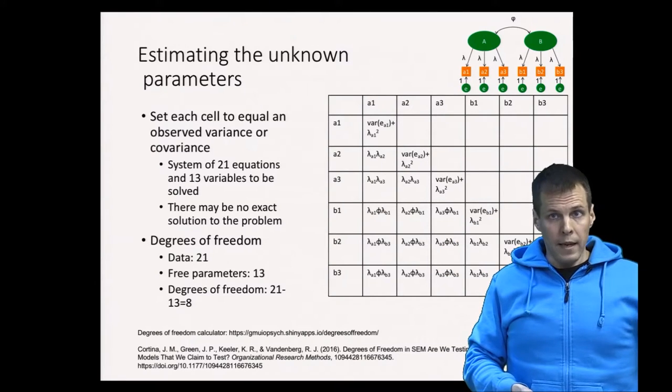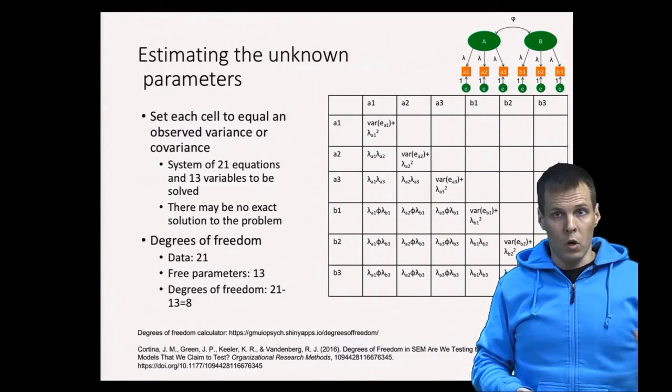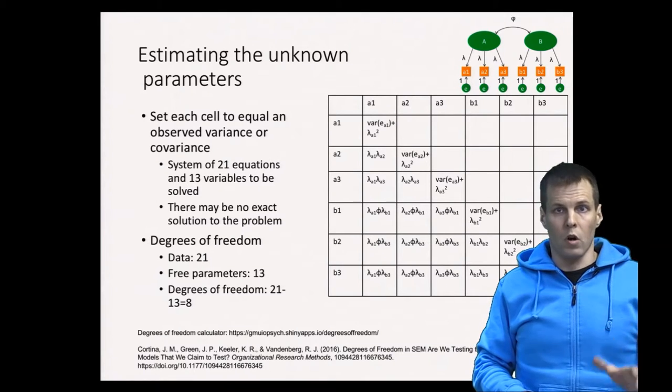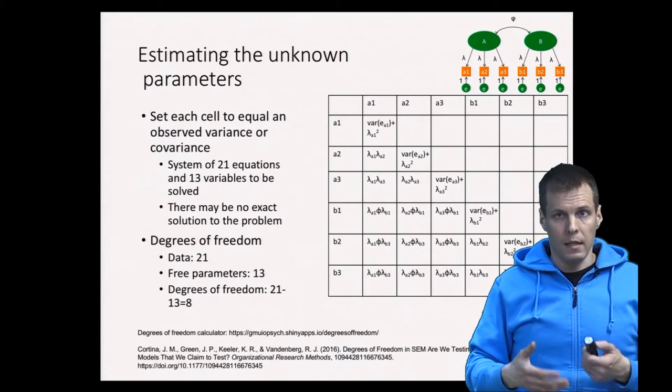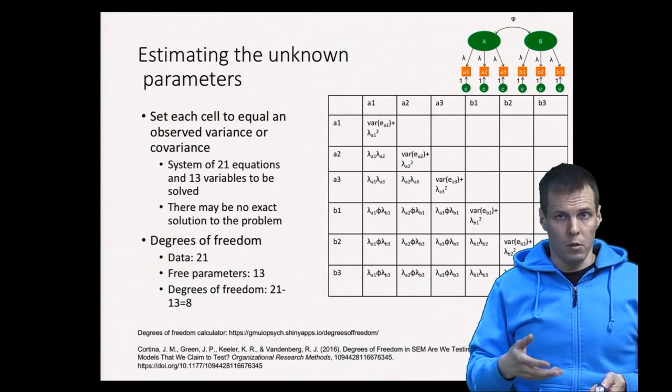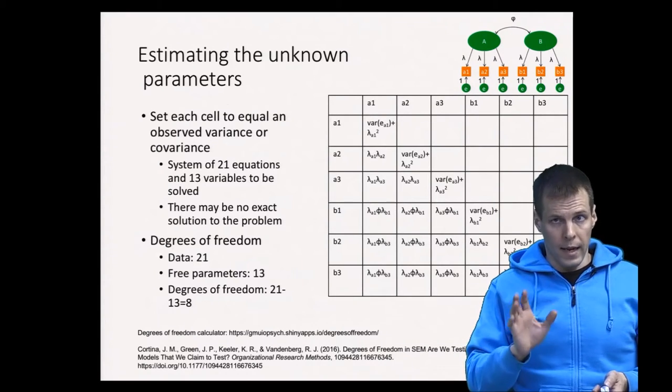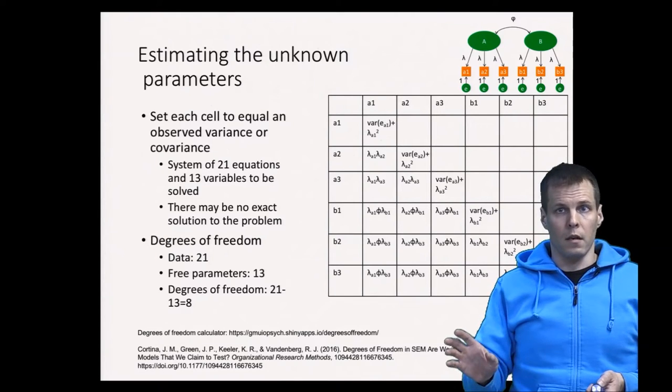The degrees of freedom is eight, which means we have a positive degree of freedom and the model is over-identified. That means we cannot typically solve it exactly.